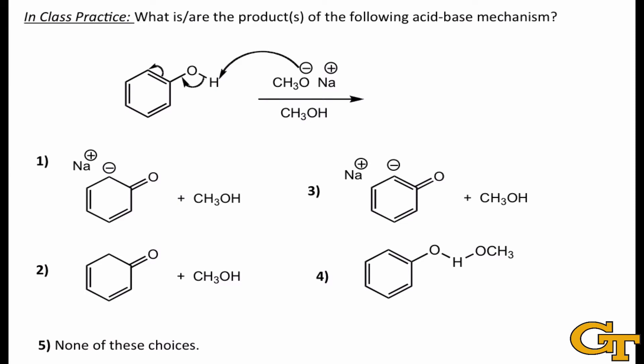The curved arrow formalism is a system designed to show us how electrons move in the course of organic reaction mechanisms. It's a very important formalism to understand because it gives us insight into how reactions work and how we can modify reactions to make them go faster or work better for our purposes.